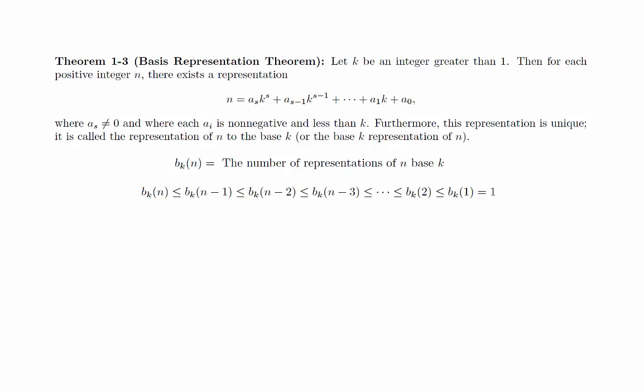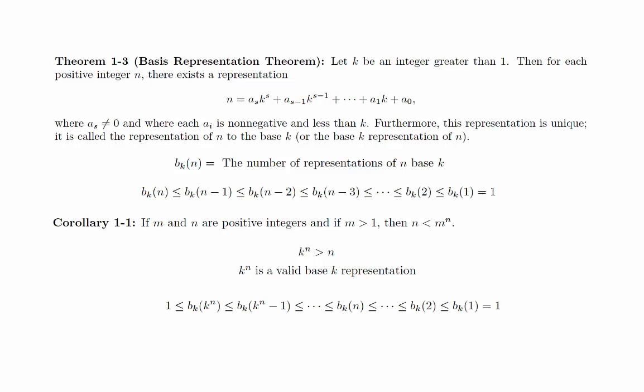However, we need to show that there is at least one representation to complete the proof. In order to do that, we will use the result from a previous section. For our application, we will have k^n is greater than n. Since k^n is a valid base k representation, we have the following string of inequalities. Notice that this shows that b_k(n) equals 1, which completes the proof.